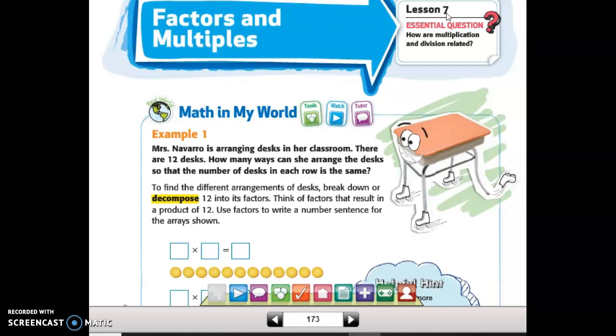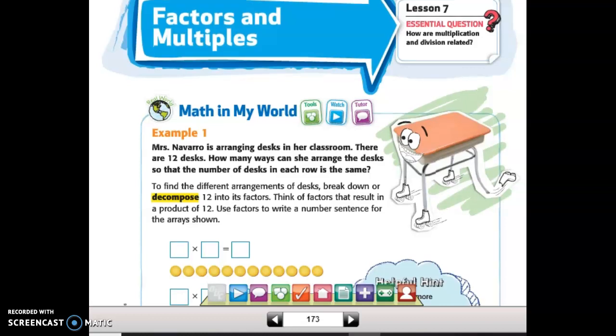We're on Chapter 3, Lesson 7. Essential question: how are multiplication and division related? Well, they're opposites, just like factors and multiples are opposites. So first, it's going to explain some factors for us.